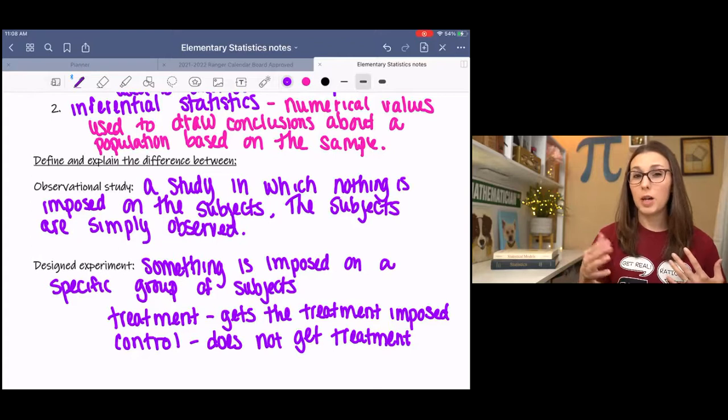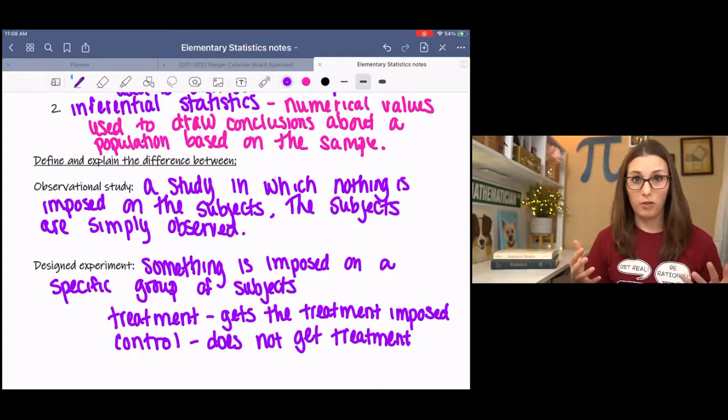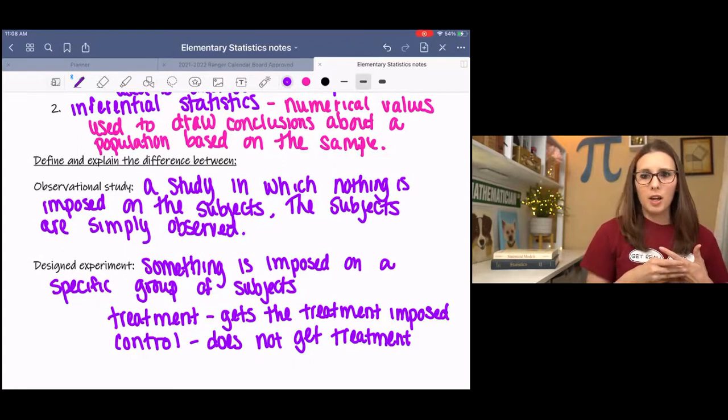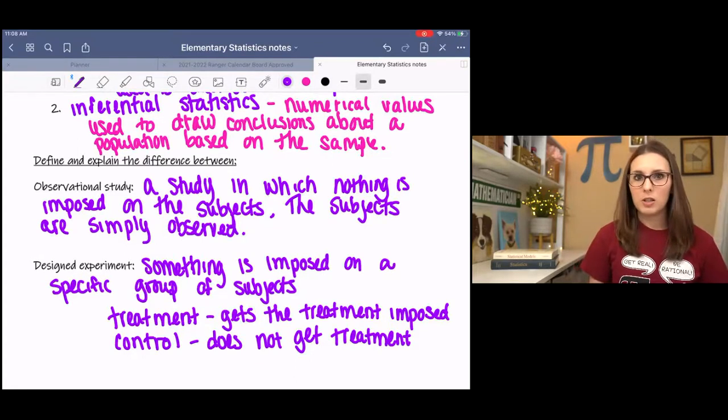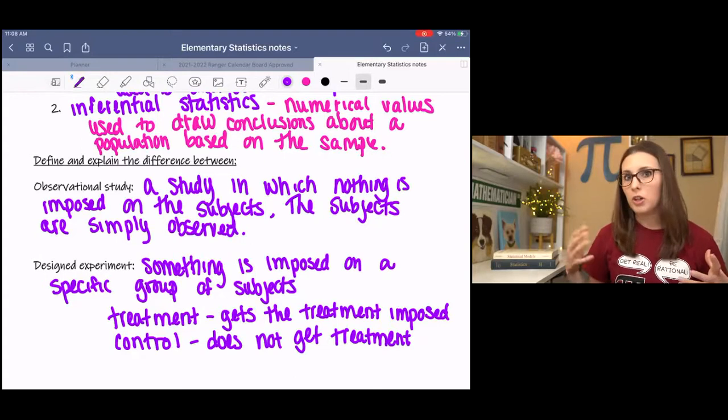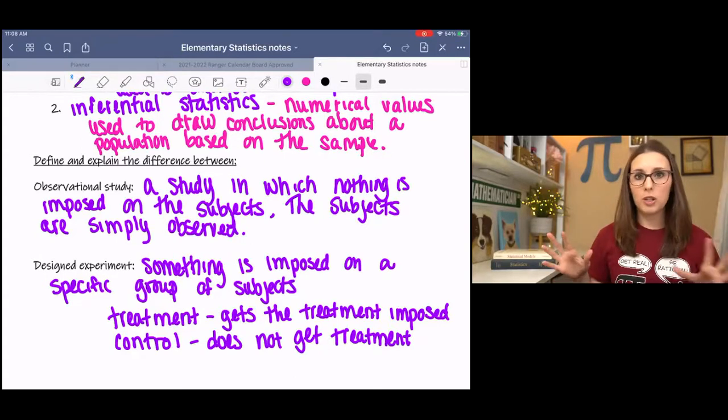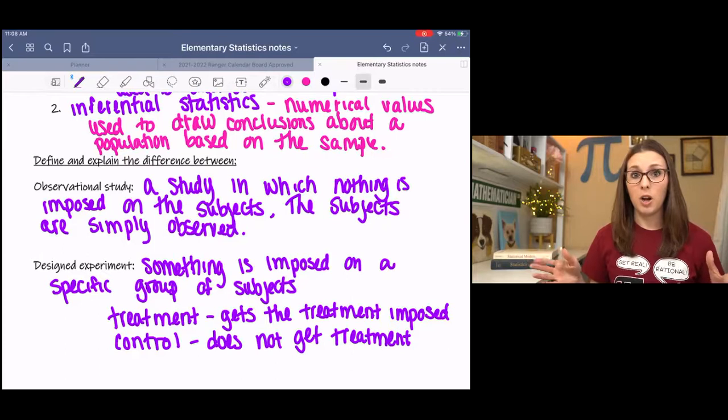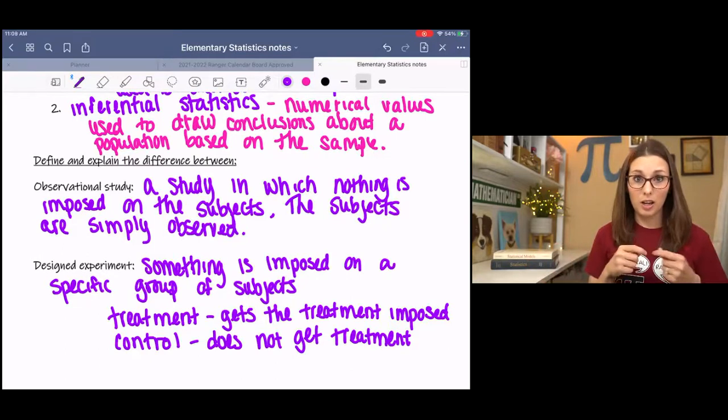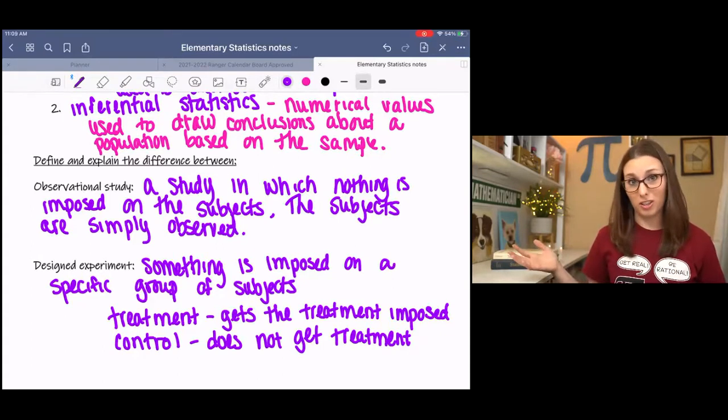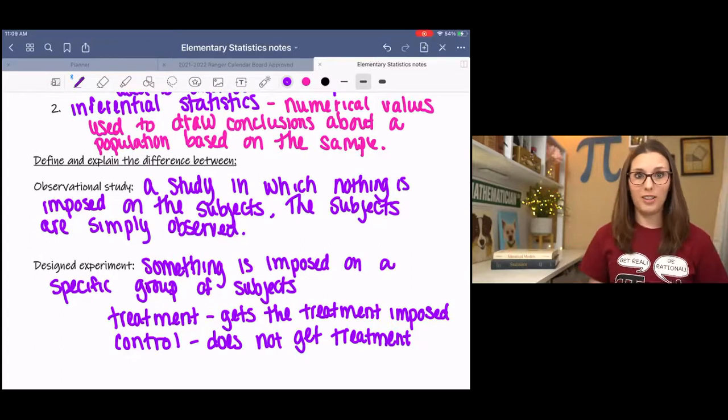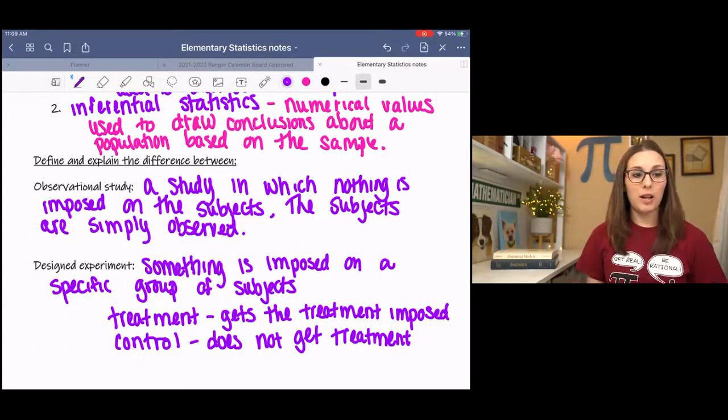And so we call that a double blind experiment when the doctors don't even know. There's an episode in Grey's Anatomy where they're doing an experiment for dementia patients and they're trying to see if something works and they have a treatment group and a control group and nobody knows who gets what. It's a double blind experiment. Well, Meredith goes in and she looks at who's getting the treatment so that she can switch it. And they basically had to throw the entire experiment out because she ruined it because she looked. So it's very important that everyone remains blind to that.